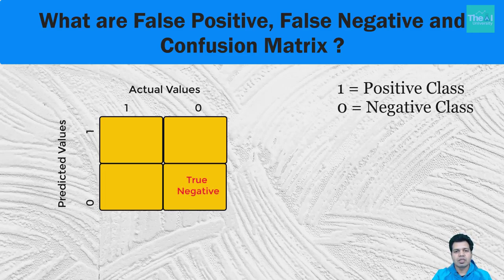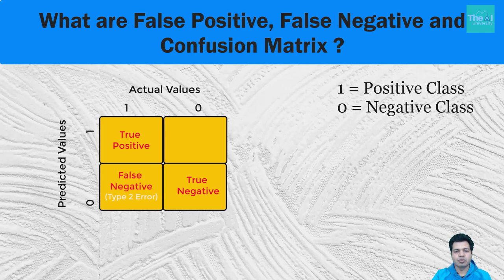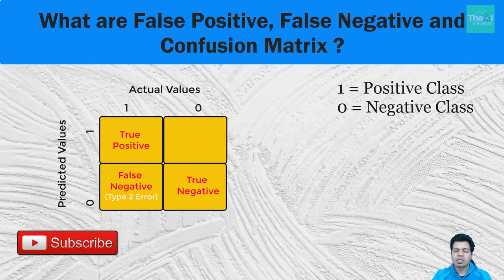Moving on to true positive: when a data point is predicted as positive class or class 1 and it is actually positive class or class 1, that is called true positive. For false negative: when a data point is predicted as negative class or class 0 but it is actually positive class or class 1, that is called false negative or type 2 error. For false positive: when a data point is predicted as positive class or class 1 but is actually negative class or class 0, that is called false positive or type 1 error.